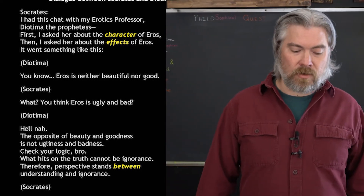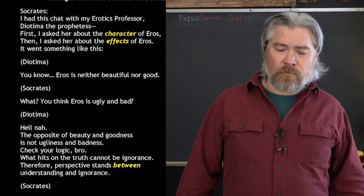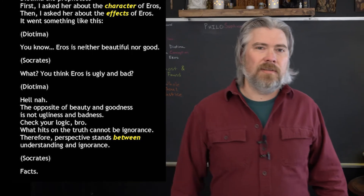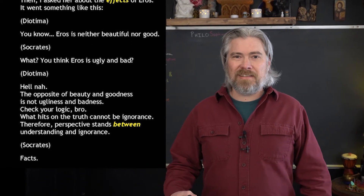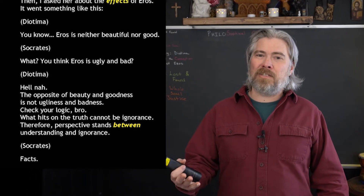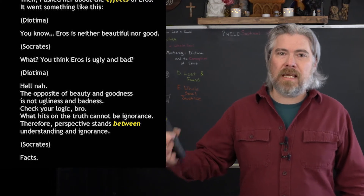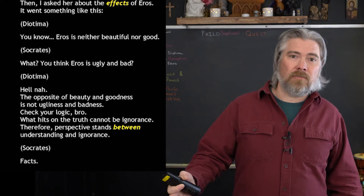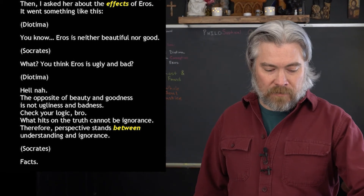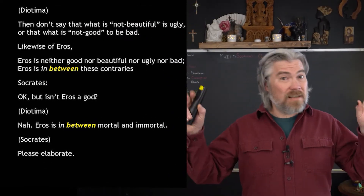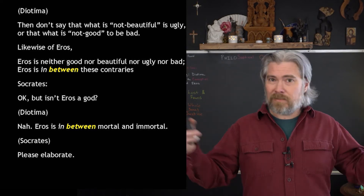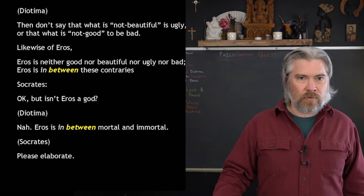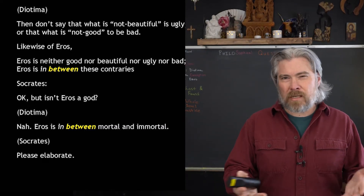Diotima says: Eros is neither beautiful nor good. Socrates is like: What? You think Eros is ugly and bad? Diotima is like: Hell no. The opposite of beauty and goodness is not ugliness and badness — check your logic. What hits on the truth cannot be ignorance. Therefore perspective stands between understanding and ignorance. Socrates: yeah, facts, I feel you on that. Then Diotima says: don't say that what is not beautiful is ugly and that what is not good is bad — it's bad logic. Likewise, don't say those things about Eros. Eros is neither good nor beautiful, nor ugly nor bad, but Eros is in between all these contraries.